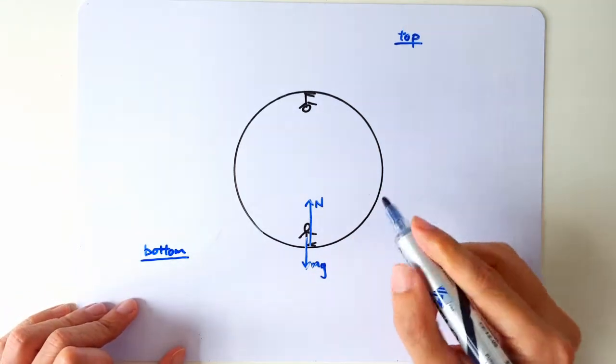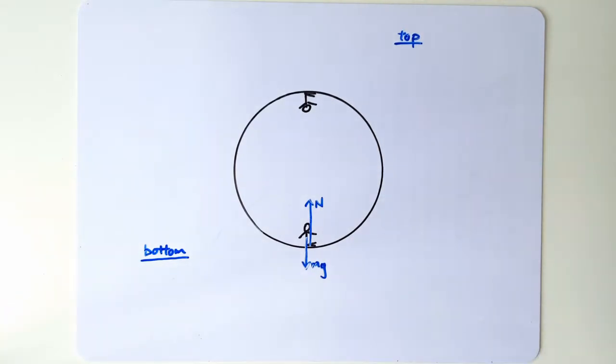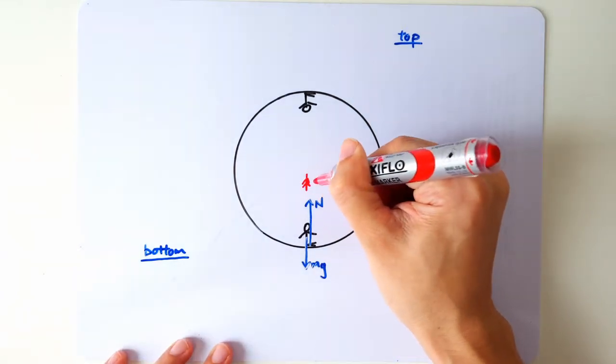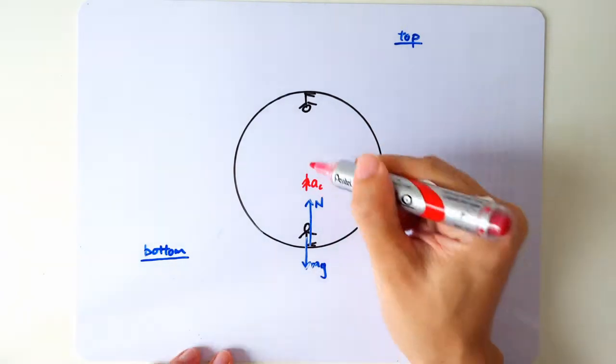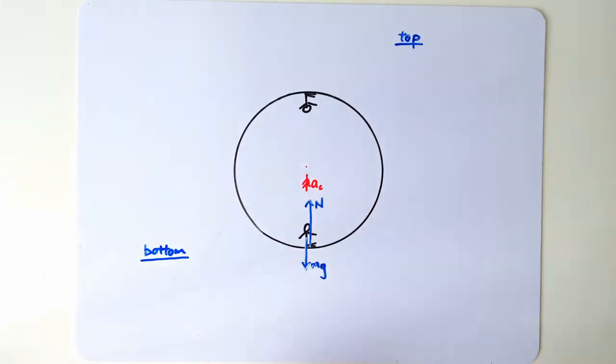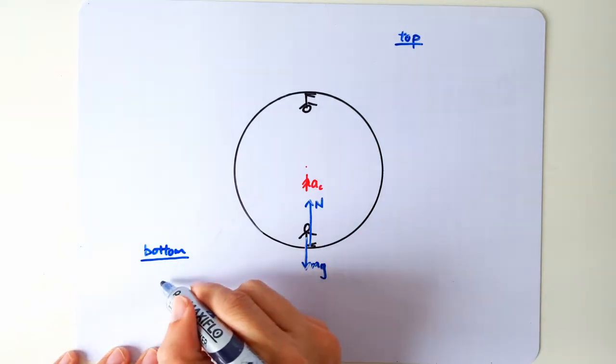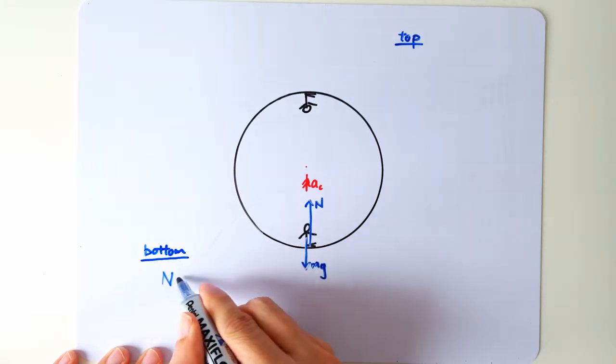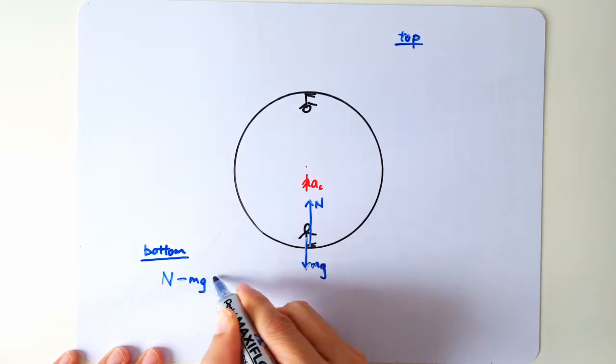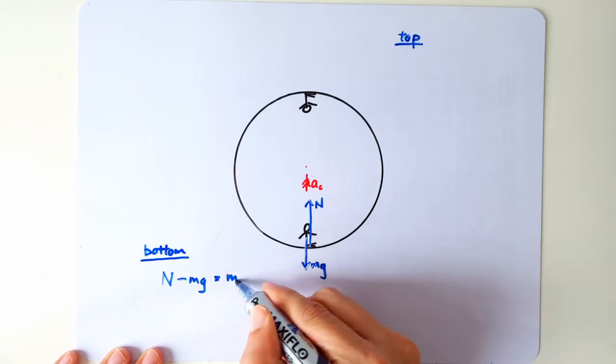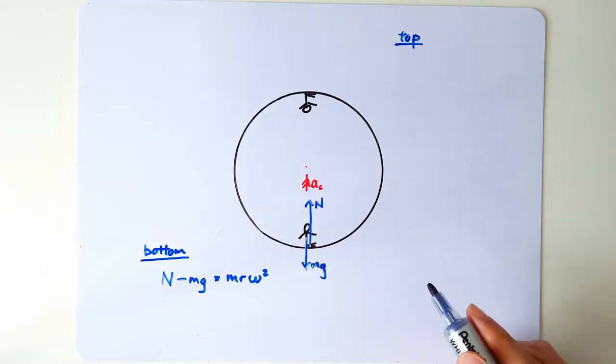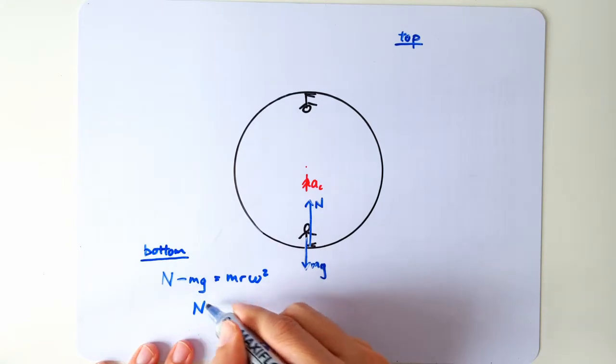When you're at the bottom, the centripetal direction is actually upward because that's the center of the circle, and the center of the circle is above you. So when you're at the bottom, it's the normal contact force minus mg that equals your required centripetal force mrω², which means the normal contact force when you're at the bottom is actually mrω² + mg.